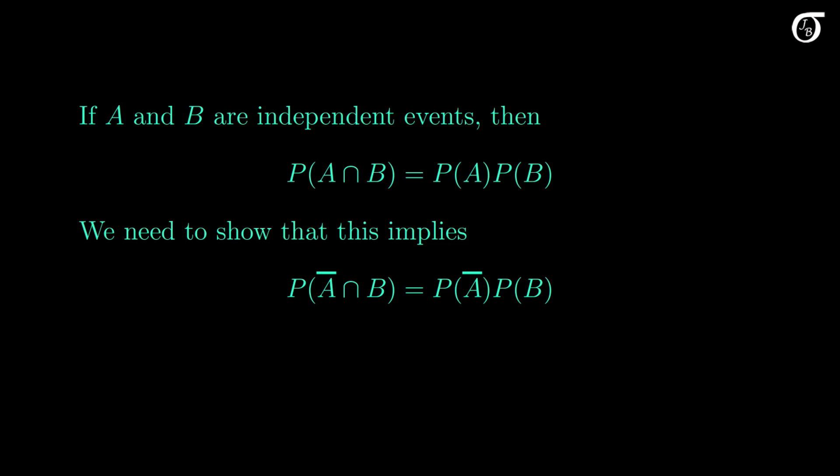This makes intuitive sense from a conditional probability argument. Recall that if A and B are independent, then the probability of A given B equals the probability of A. In other words, knowing that event B occurs does not change the probability of A. If knowing that event B occurs doesn't change the probability of A, then it stands to reason that knowing B occurs doesn't change the probability of A complement. But let's see if we can show that formally.